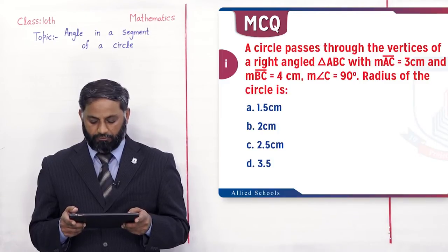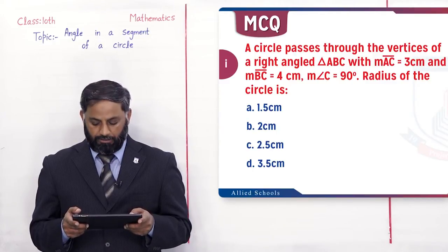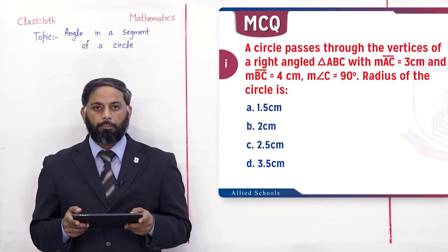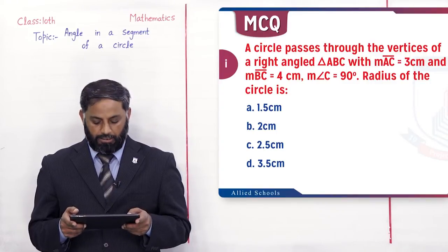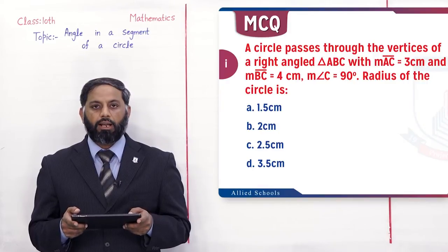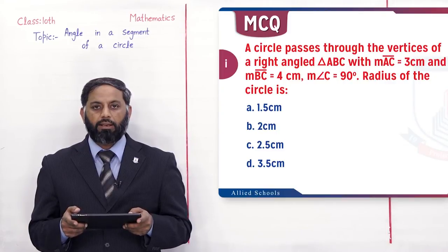Ab students, triangle ABC چونکہ ایک right triangle ہے اور right angle vertex C پہ ہے، تو measurement of AC perpendicular ہوگا جو کہ 3 cm ہے، measurement of BC base ہوگی جو کہ 4 cm ہے۔ Hypotenuse ہم find کریں گے اور hypotenuse کی جو value آئے گی وہ definitely diameter of the circle ہوگی۔ ہم Pythagorean theorem apply کریں گے: hypotenuse² = perpendicular² + base²۔